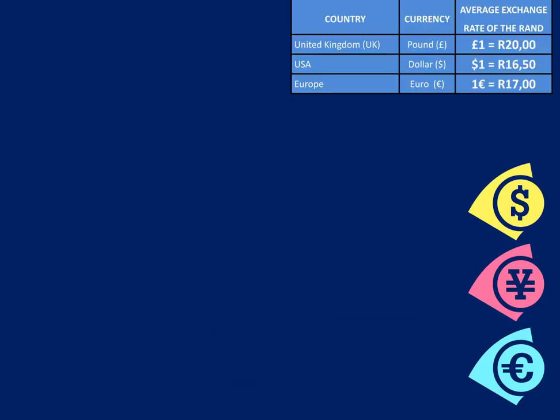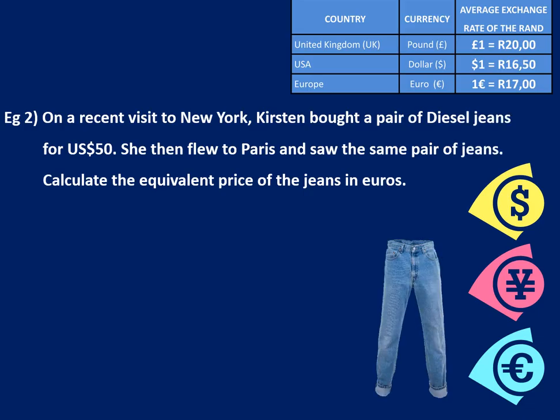Using the same exchange rates, let's look at example two. On a recent visit to New York, Thurston bought a pair of diesel jeans for 50 US dollars. She then flew to Paris and saw the same pair of jeans. Calculate the equivalent price of the jeans in euros. Now we don't have the exchange rate for US dollars to euros, so what we're going to have to do is first convert it to rands and then from rands into euros.